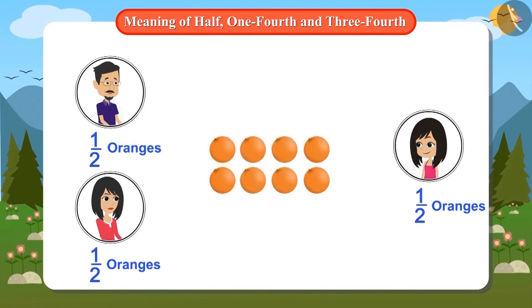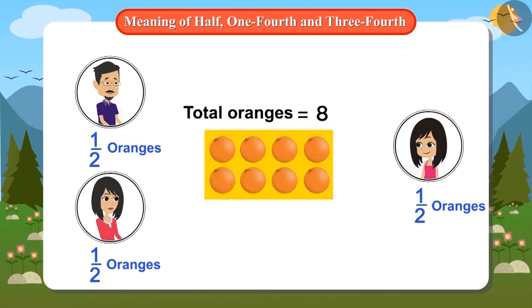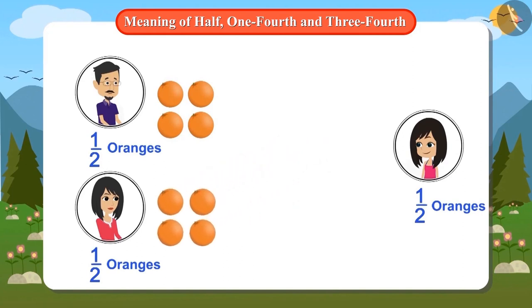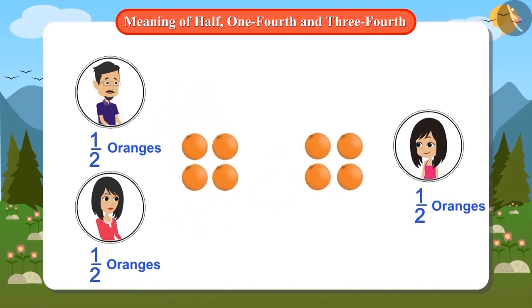We have a total of eight oranges. Four oranges is half of eight oranges. Let's give four oranges to papa and four oranges to mummy. But hey, what's this? There are no oranges left for Neha. Why did this happen? Adding half the number of oranges twice gives you the full number. So any shape or object can have at most two halves and can be divided between at most two people.